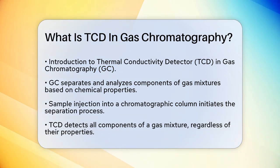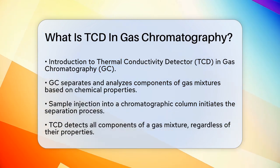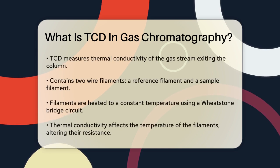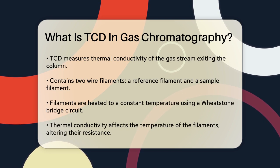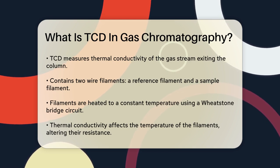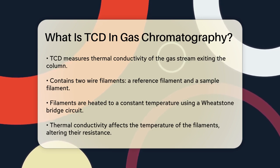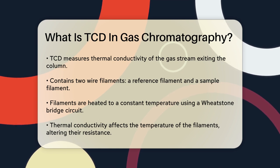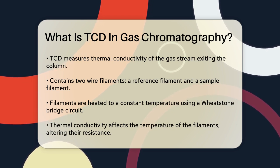The TCD is special because it can detect all components, regardless of their chemical properties. The TCD measures the thermal conductivity of the gas stream coming out of the column. Inside the TCD, there are two wire filaments — one is a reference filament, and the other is a sample filament. These filaments are heated to a constant temperature using a Wheatstone bridge circuit. When the gas stream from the column passes over these filaments, the thermal conductivity of the gas affects the temperature of the filaments.